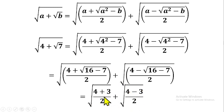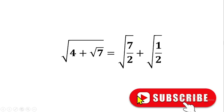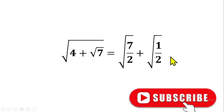So what is 4 plus 3? Four plus 3 gives us 7, so we have 7 over 2. Then 4 minus 3 gives us 1, so we have 1 over 2. That means technically we will be having square root of 7 over 2 plus square root of 1 over 2. So when we simplify square root of (4 + square root of 7), it gives us square root of (7/2) plus square root of (1/2).